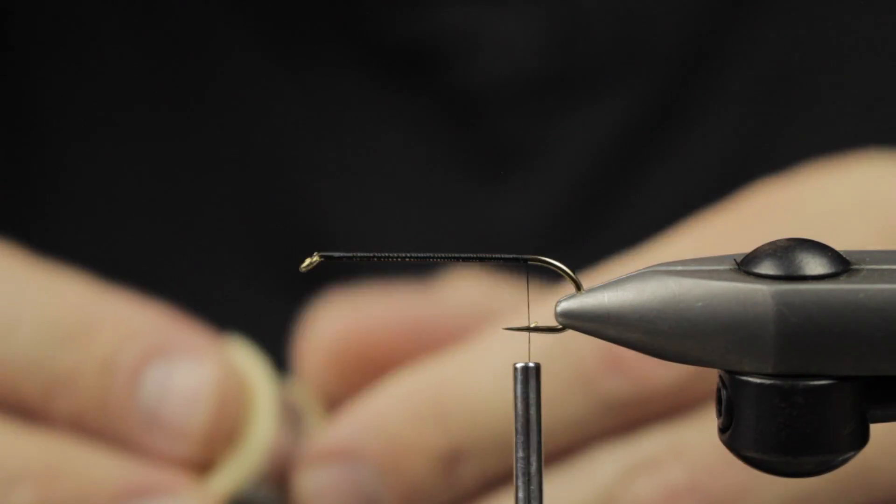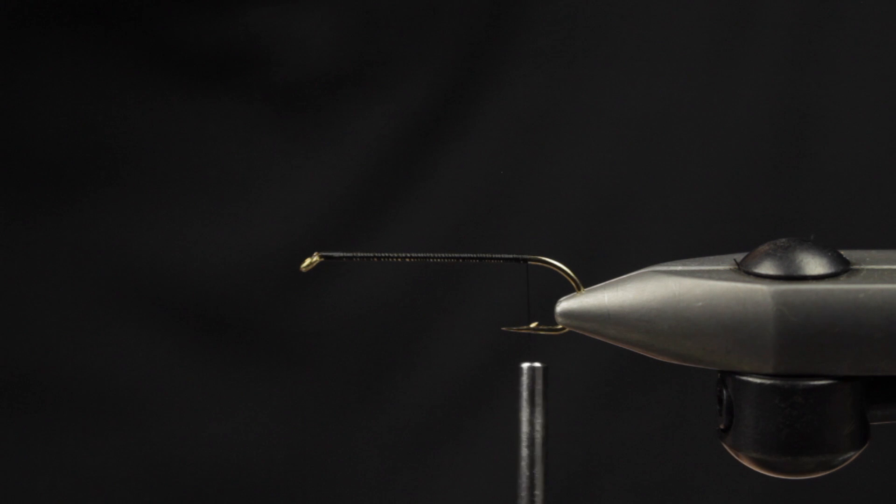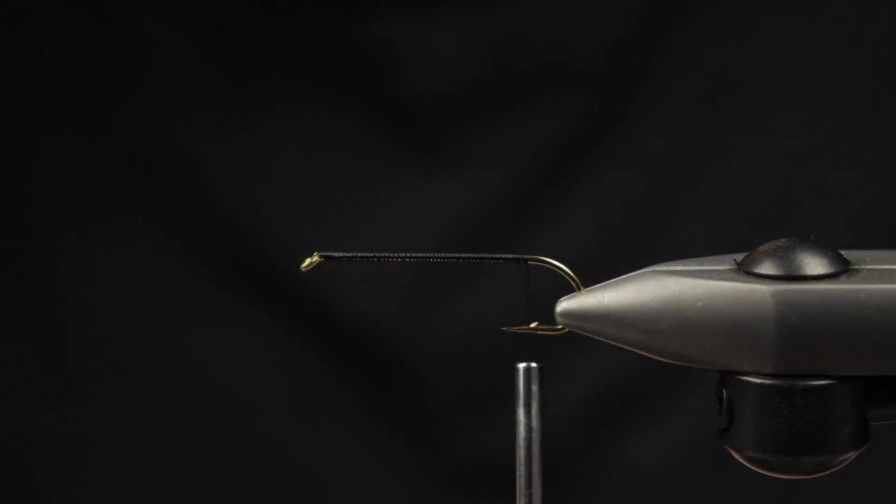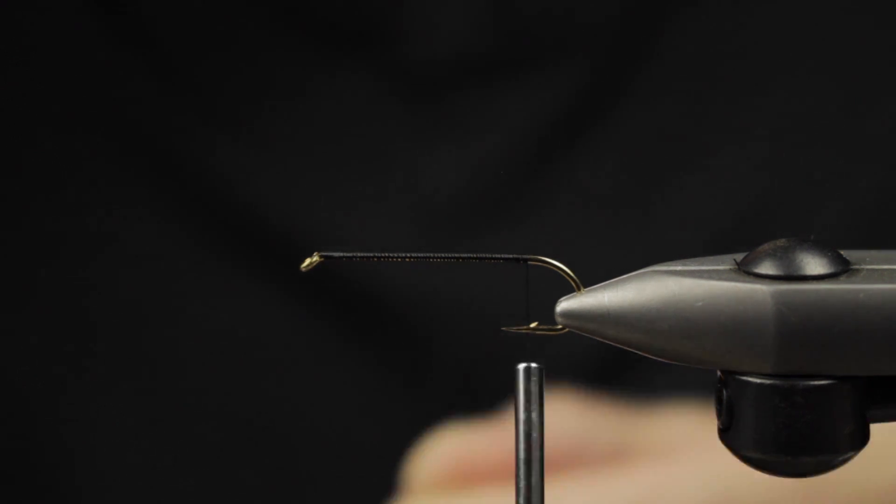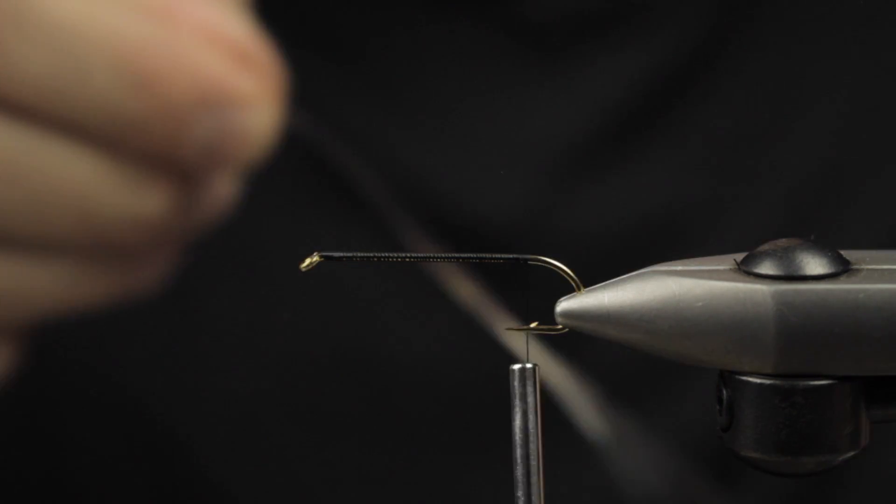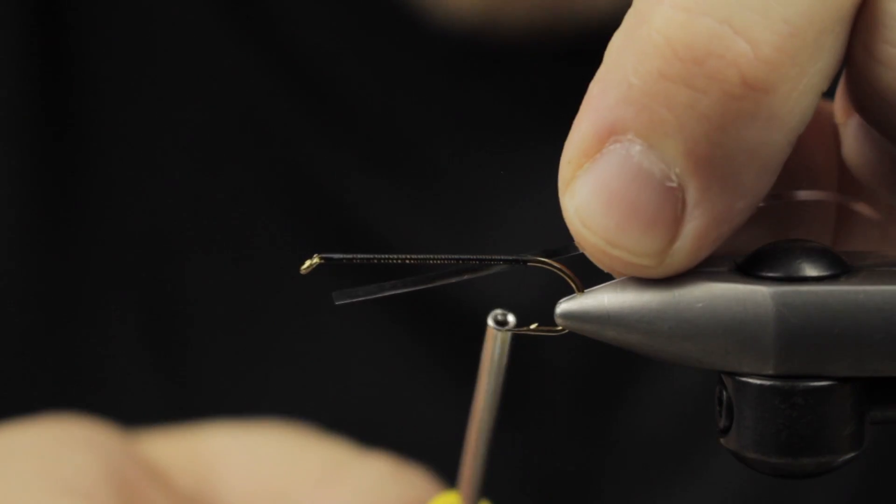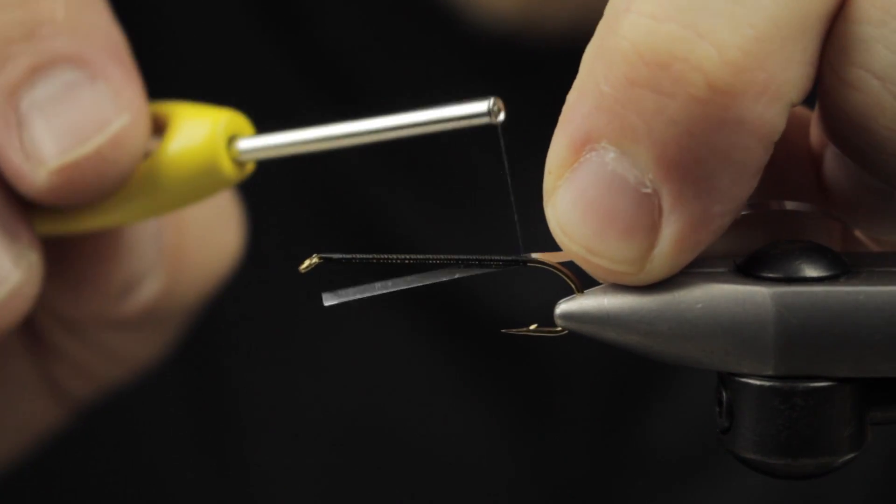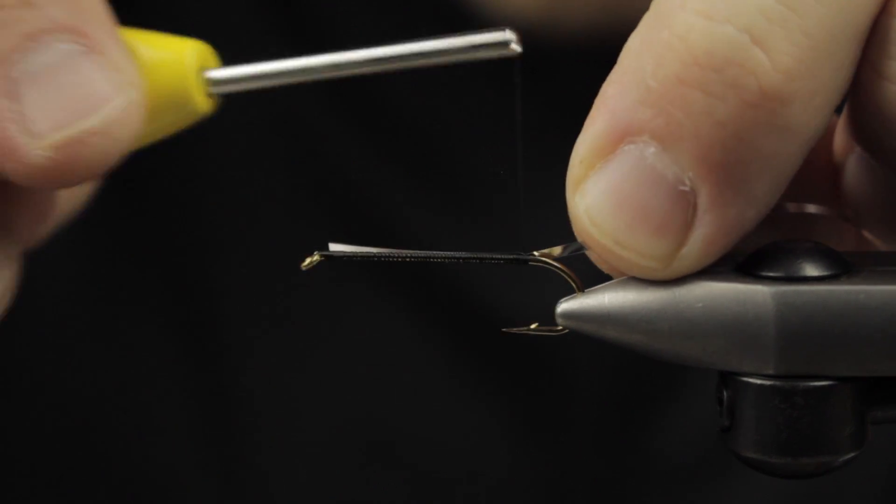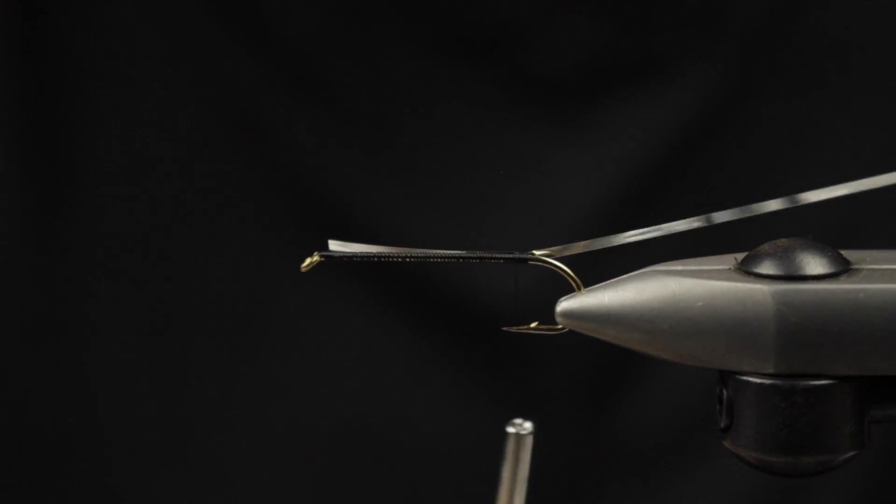This is a medium tinsel—one side is gold, the other side silver, which is very standard tinsel in the fly fishing industry. We're going to go for the silver side, so I'm going to tie the silver side in.